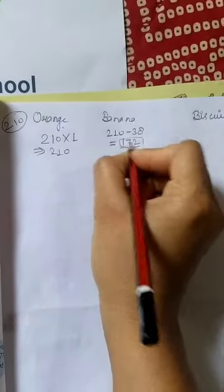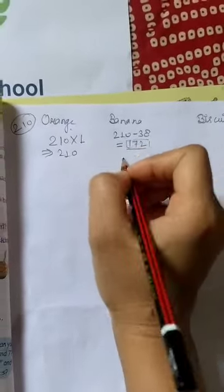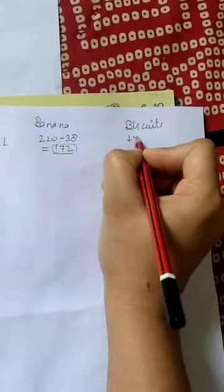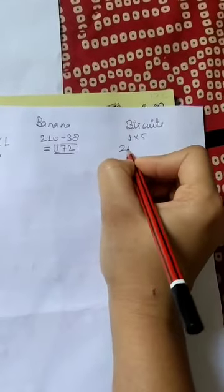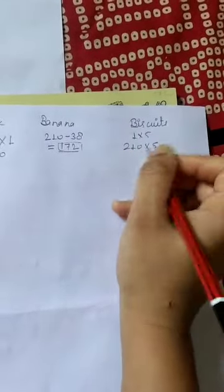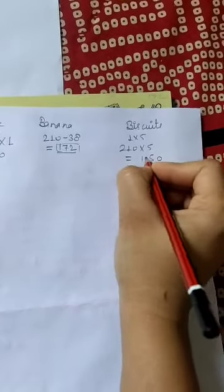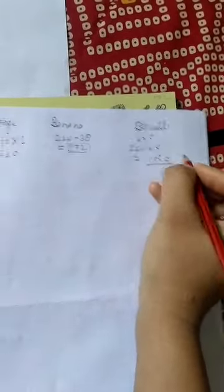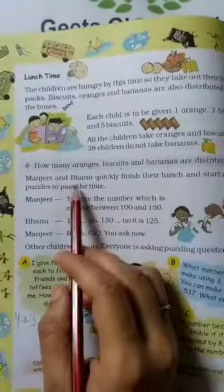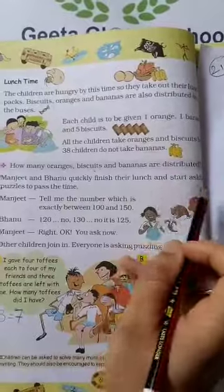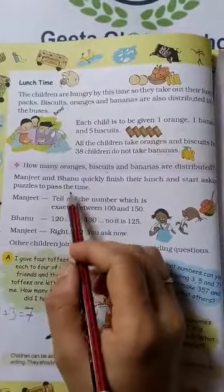Now we are asking how many oranges, how many bananas are distributed. For biscuits, one student got five biscuits and there are 210 total students. We multiply by five. So 1,050 biscuits total are distributed among all the students.